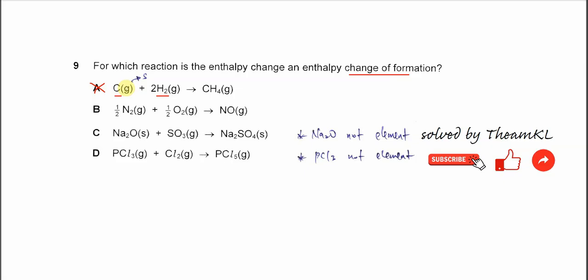Under room conditions, carbon is a solid. For B, one mole of nitrogen monoxide gas forms from its elements. Nitrogen and oxygen are the elements to form nitrogen monoxide, and nitrogen is in gas form, oxygen is in gas form. So B is correct.